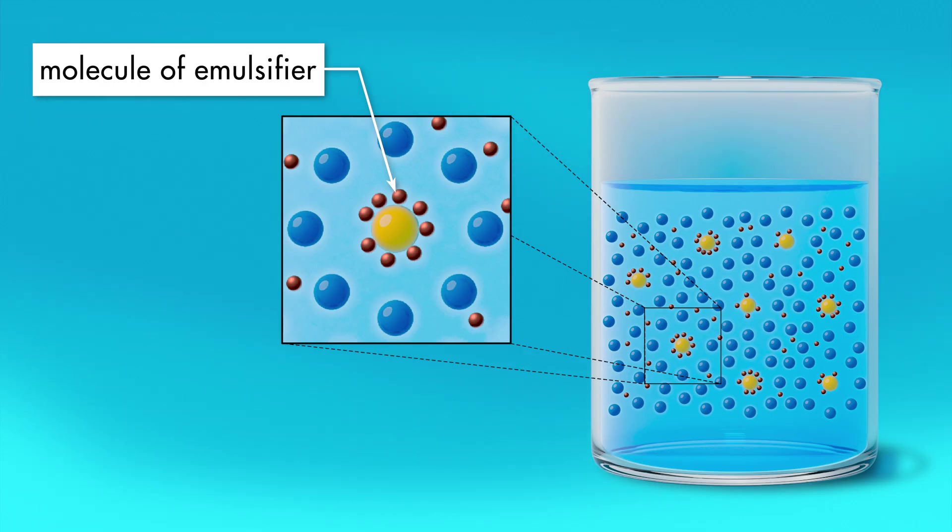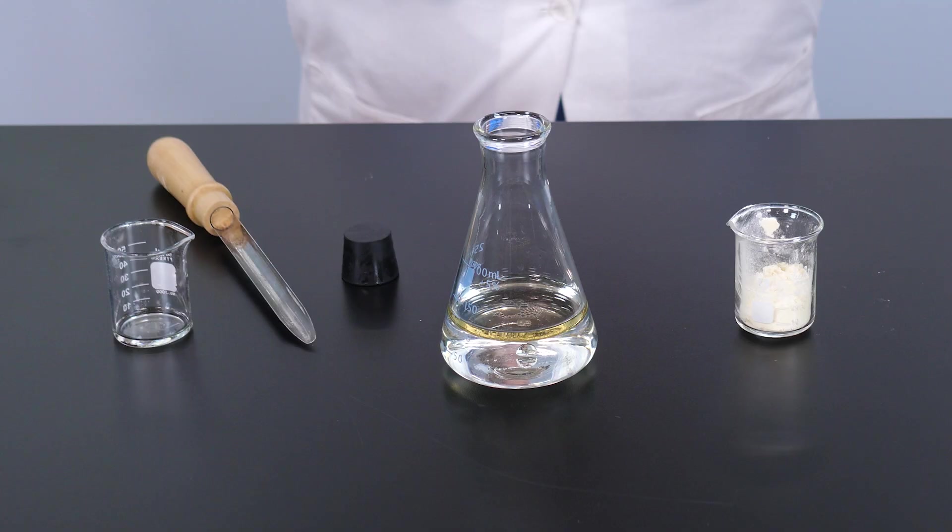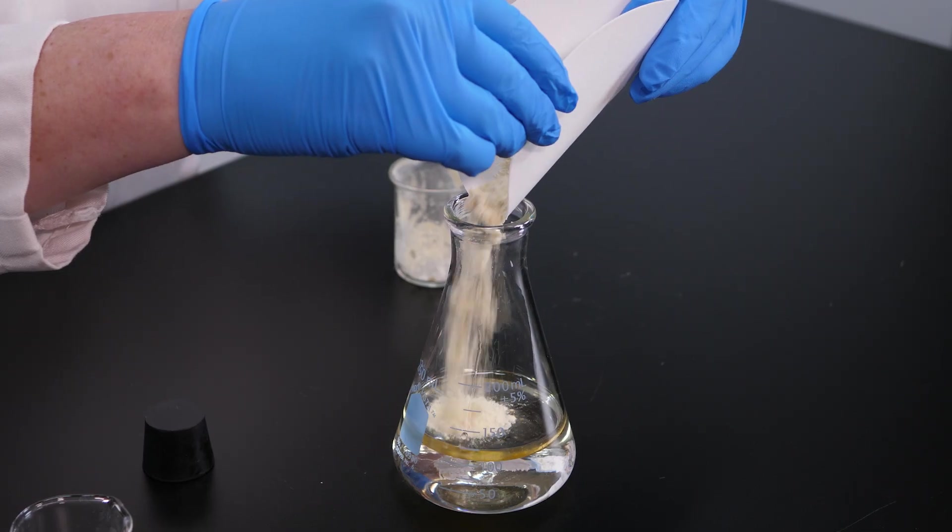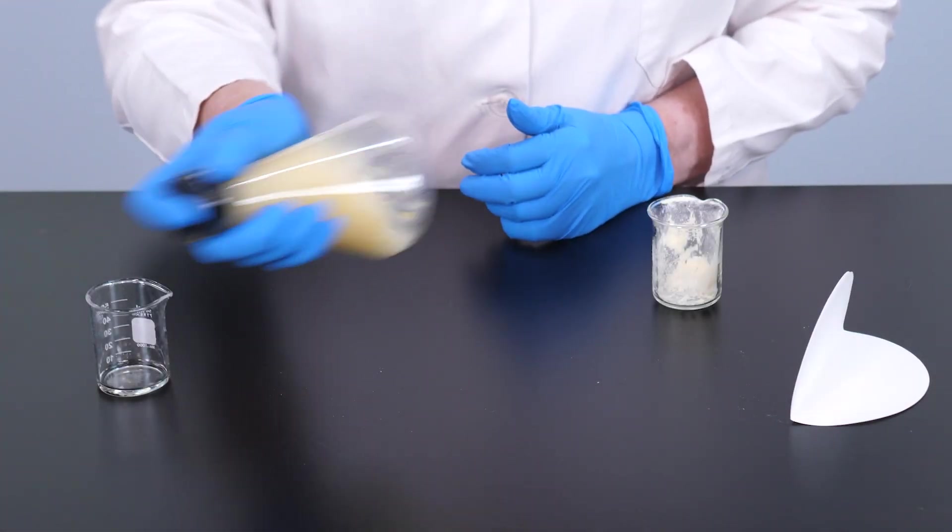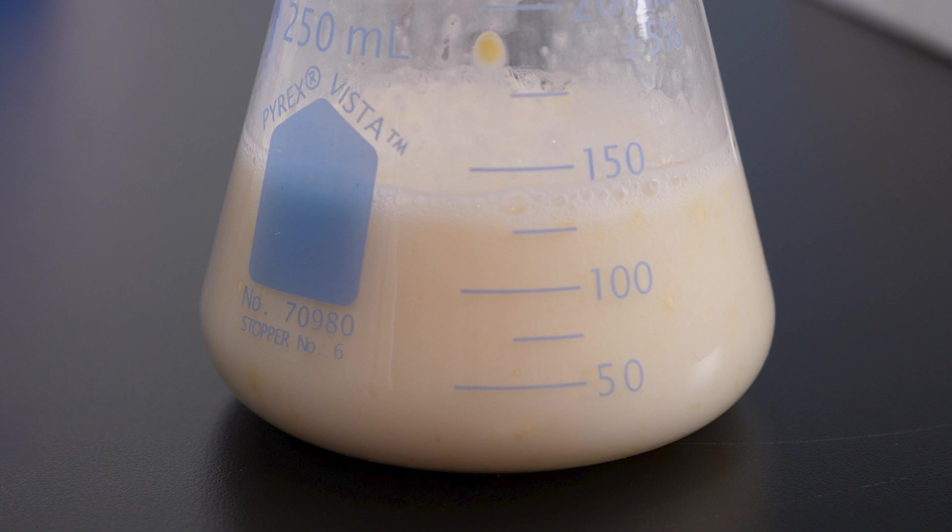An emulsifier is attracted to oil, so when it is added to the mixture, its molecules cling to the oil and surround the droplets. Molecules of the emulsifier and molecules of water are also attracted to each other, so the emulsifier surrounding the oil droplets causes the oil droplets to become suspended between water molecules. This allows two liquids that would not ordinarily mix to form a colloid. One common emulsifier is lecithin. Lecithin is a fatty substance found in soybeans, egg yolk, and other plant and animal cells. Let's see what happens when we add 10 grams of lecithin to the oil and water mixture and shake it again. Lecithin caused the oil and water to form a cloudy but stable colloid.